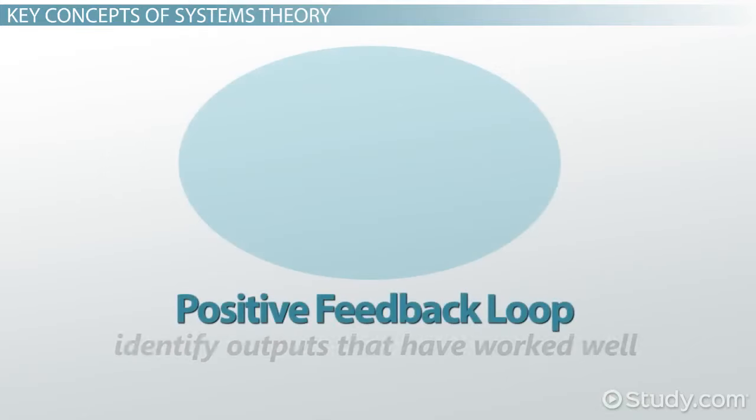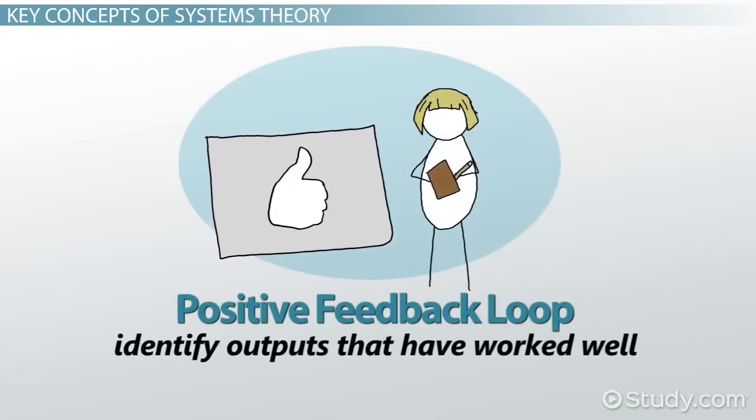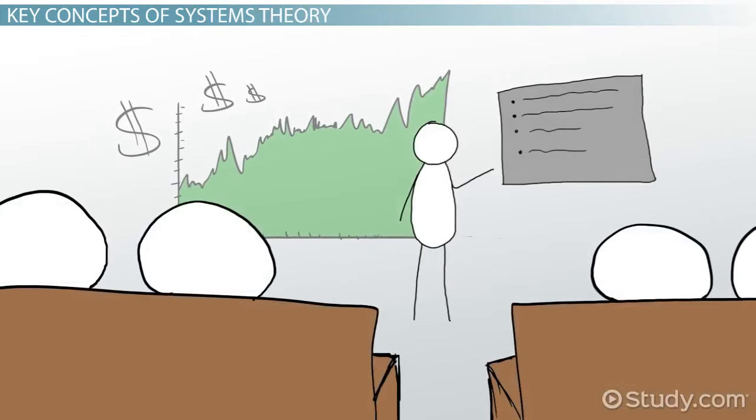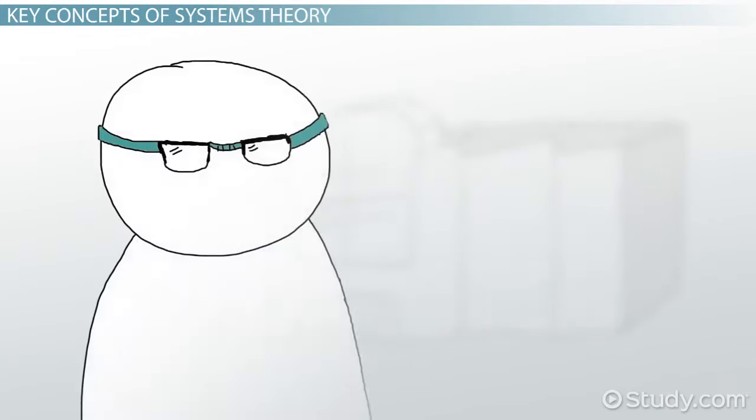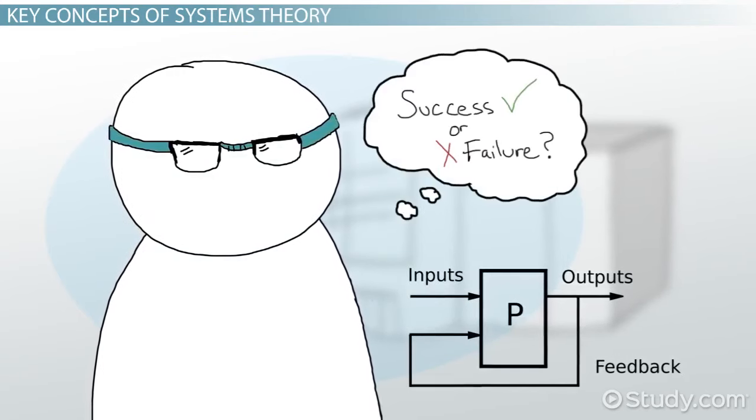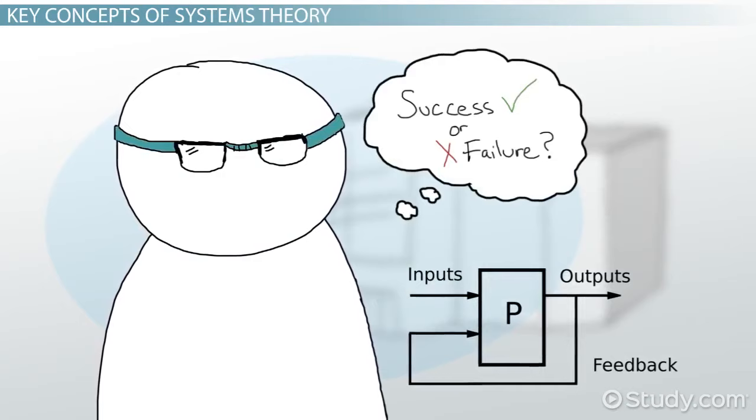A positive feedback loop can identify outputs that have worked well. For example, a successful marketing campaign that yields high sales. Thus, feedback loops are a means of confirming success or signaling that corrections to the system need to be made.